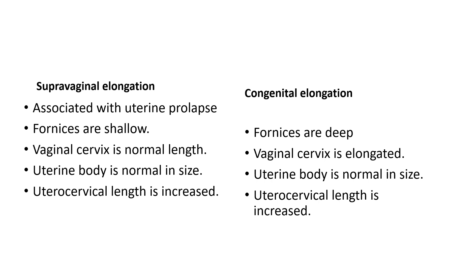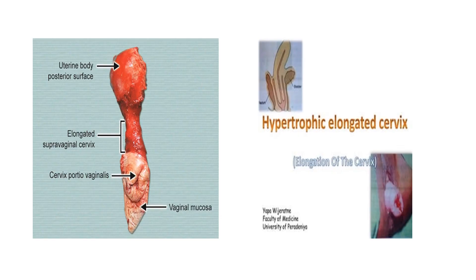The length of the uterus and cervix will be increased in both of these conditions. Looking at the diagram, it shows the elongated supra-vaginal cervix with the uterine body and its posterior surface. The elongated part is the supra-vaginal portion. This also shows a hypertrophic elongated cervix where the vaginal part is bulky, congested, coming out, and the vaginal part is elongated.